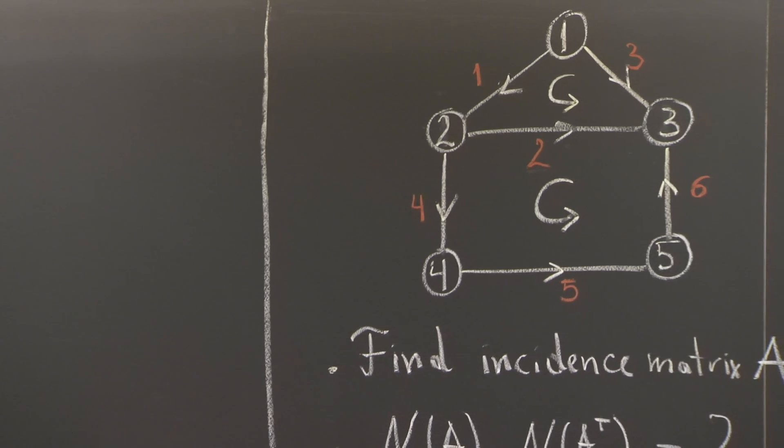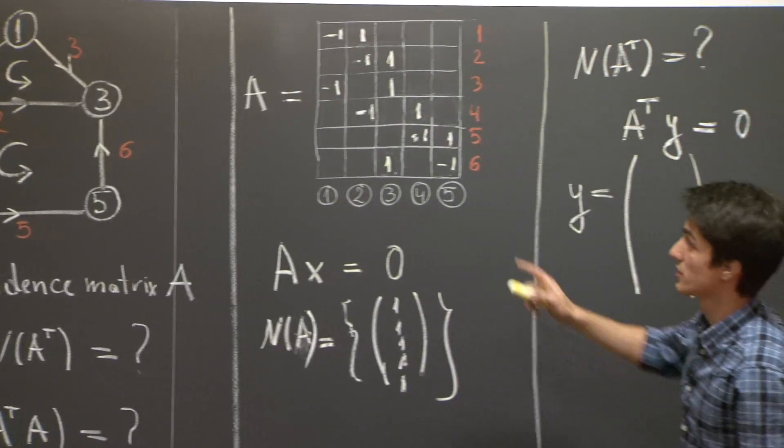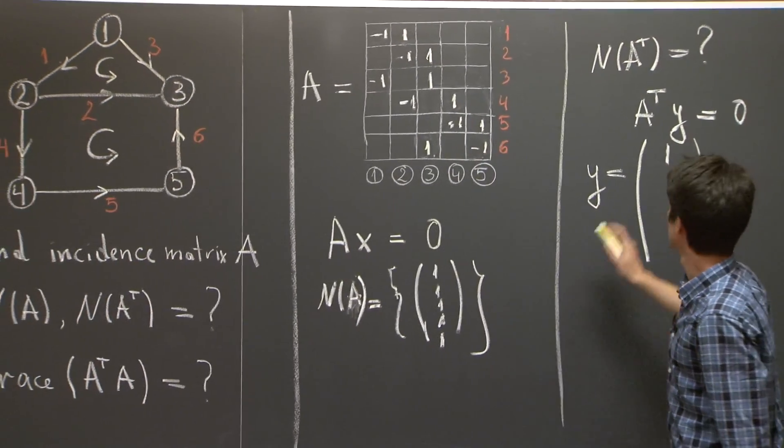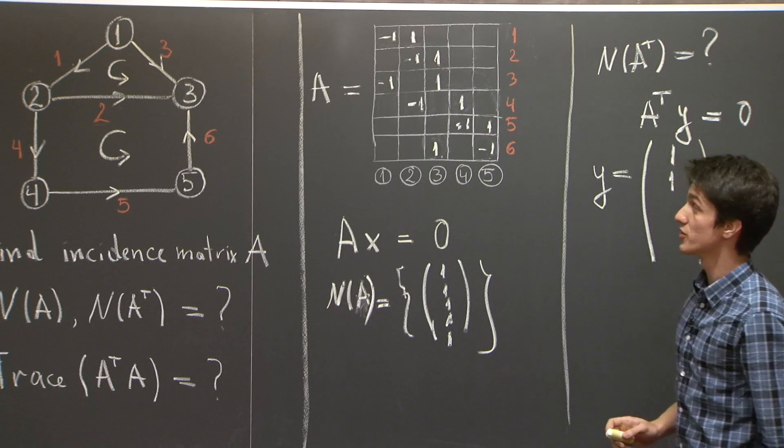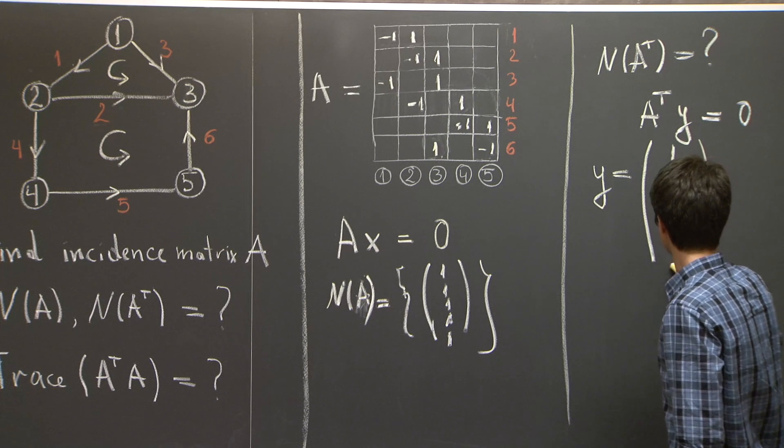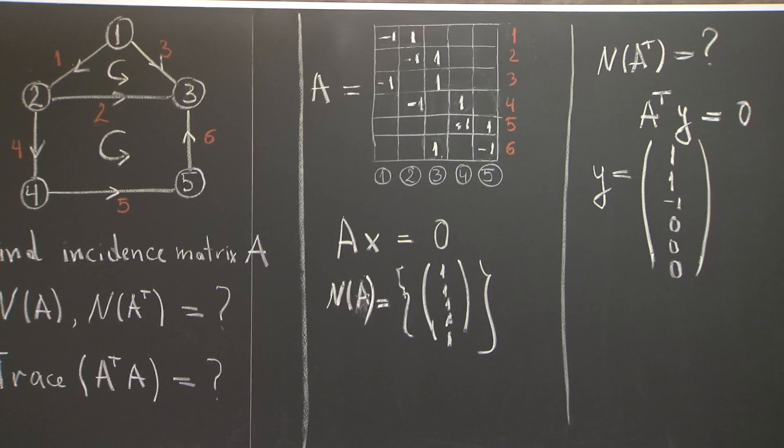So, let me write this down, the following configuration. So, 1 along edge 1, 1 along edge 2, and negative 1 along edge 3, and the rest 0, is a solution to A transpose y equals 0.